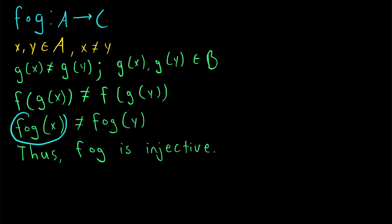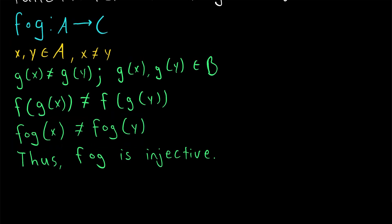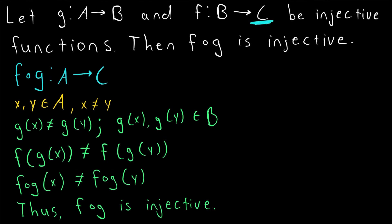F of G of X and F of G of Y are both elements of C, the codomain of the composite function, since F is the last part of the composition and F sends elements to C. So we've just proven that function composition preserves injectivity: if we've got a pair of injective functions and we compose them, the resulting composite function will also be injective.